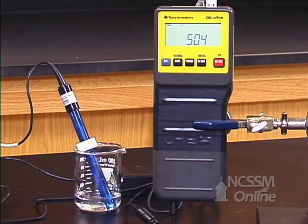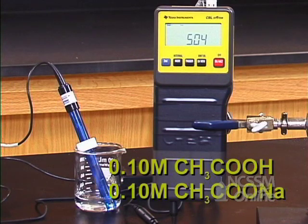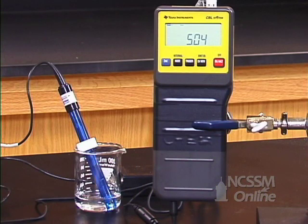We now have a solution that is 0.1 molar in acetic acid and 0.1 molar in sodium acetate. Notice that the pH is significantly higher than the solution of just 0.1 molar acetic acid. We have added some of the conjugate base so the pH is higher.